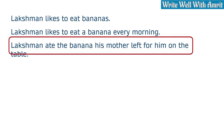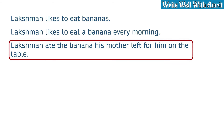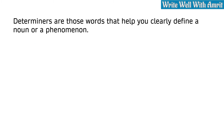In the third sentence, which banana did Lakshman eat? He ate the banana his mother left on the table for him. This is more specific — he ate not just any banana, but the banana his mother left for him. The banana is clearly determined and identified. The simple meaning of determiners is that they are words that help you clearly define a noun or a phenomenon.